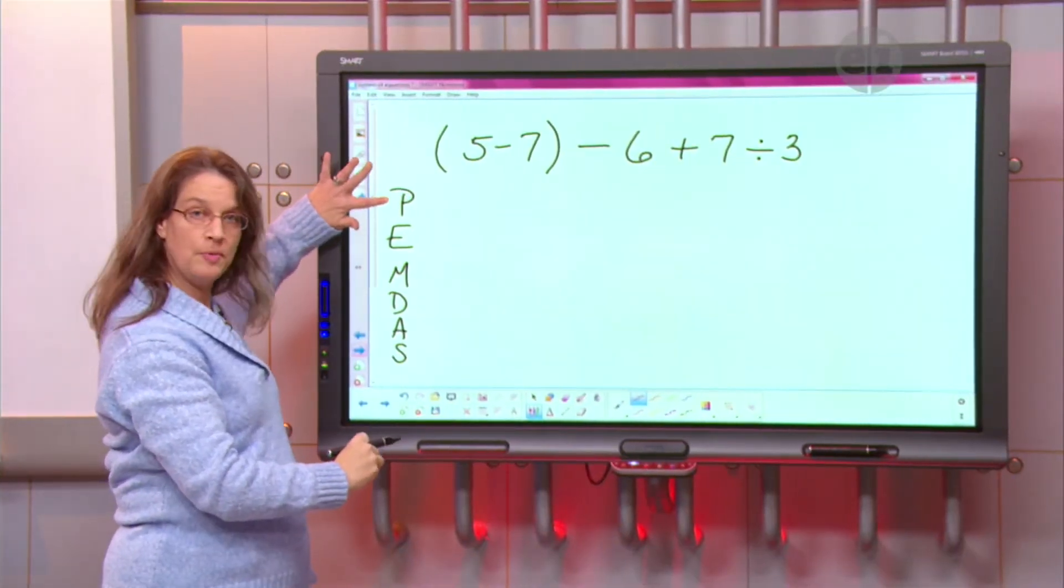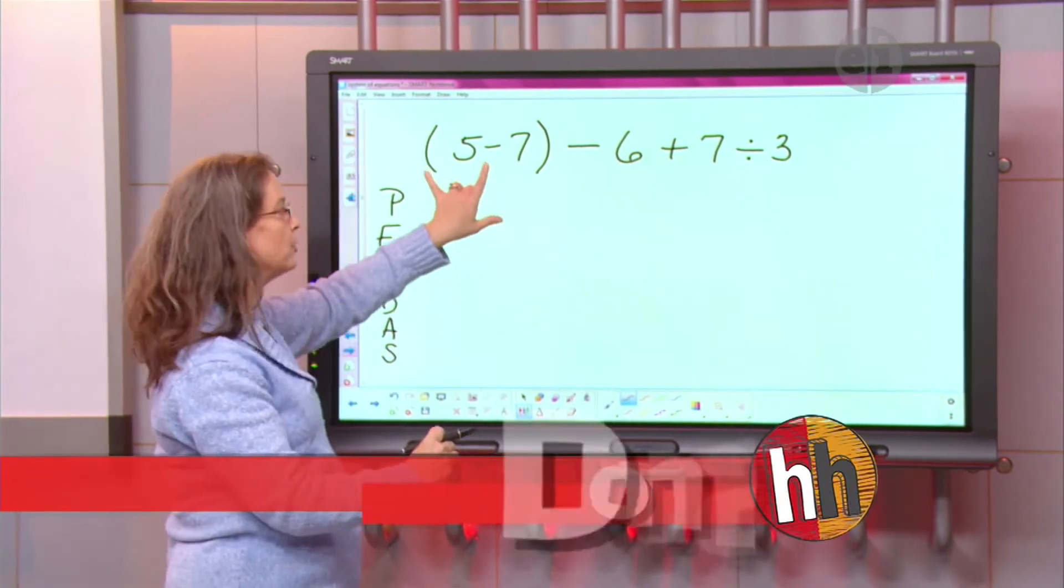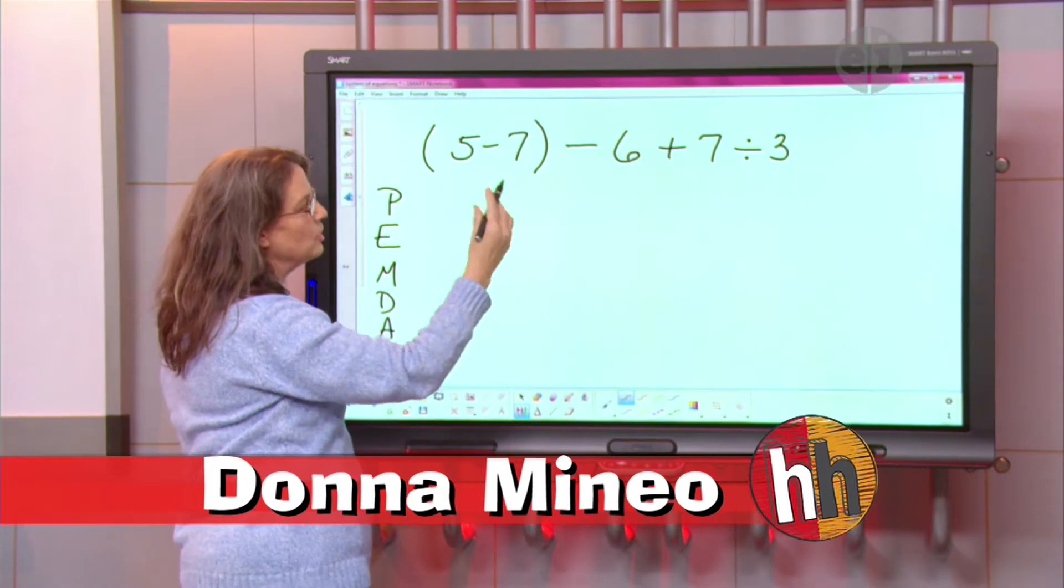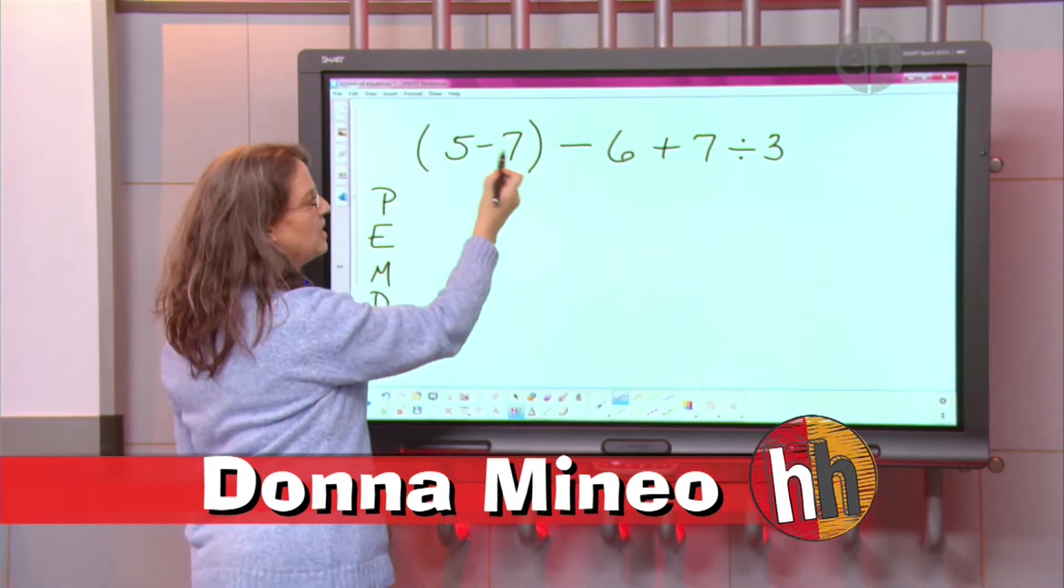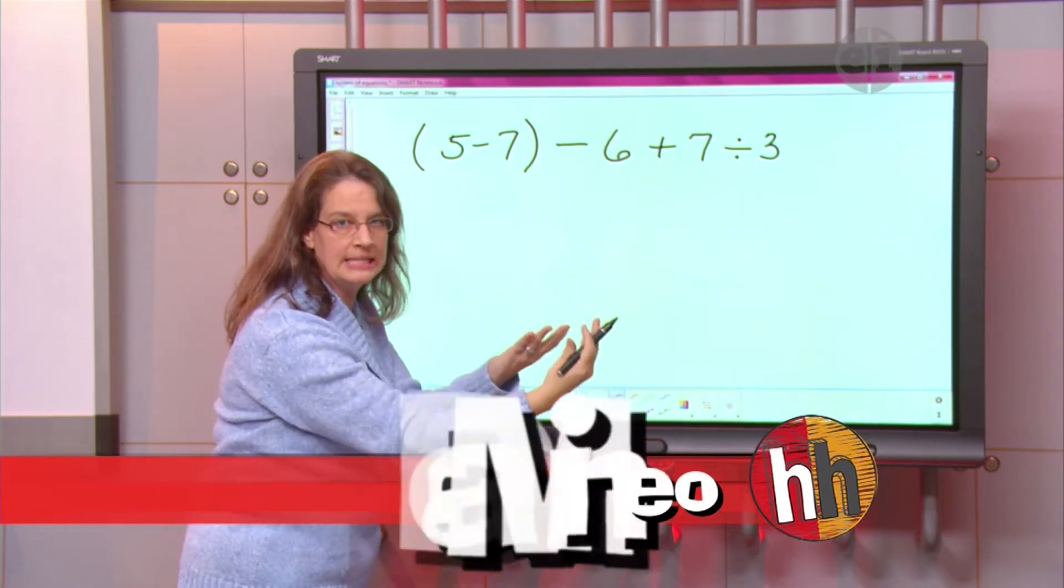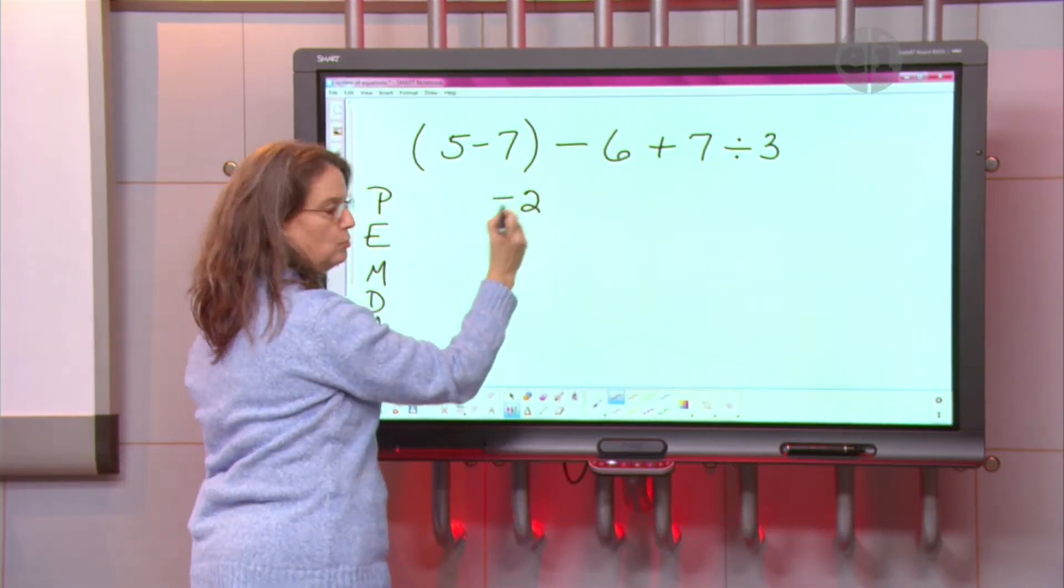The P stands for parentheses, so you've got to go through your entire problem and look for parentheses. Well, they're right here. So we are going to do 5 take away 7. It looks like you're dealing with some integers, because you can't take 7 away from 5 without having something missing. So 5 take away 7, I'm missing 2.